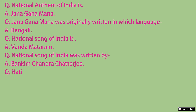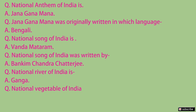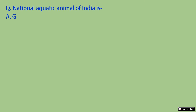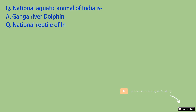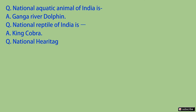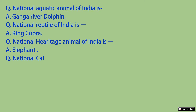National river of India is? Ganga. National vegetable of India is? Pumpkin. National aquatic animal of India is? Ganga river dolphin. National reptile of India is? King cobra. National heritage animal of India is? Elephant. National calendar of India is? Saak calendar.